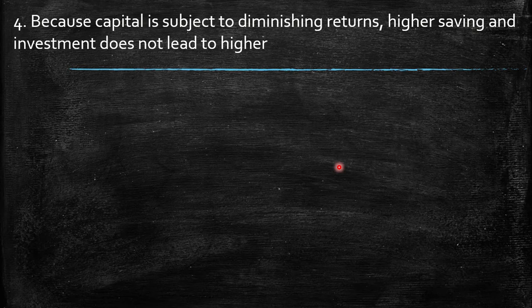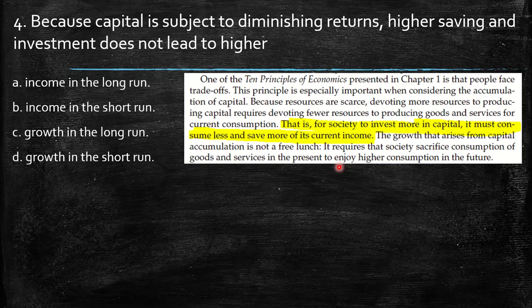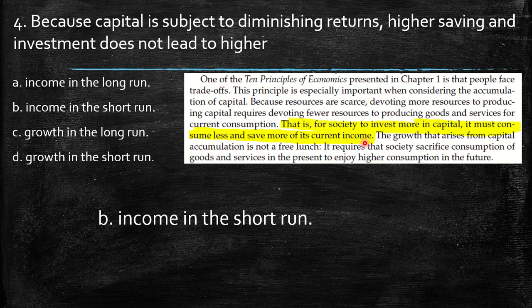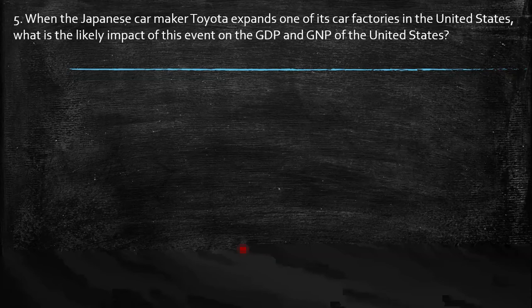Fourth question: because capital is subject to diminishing returns, higher saving and investment does not lead to higher what in the long run — income in the short run, growth in the long run, income in the long run, or growth in the short run? During the chapter, there is a paragraph saying that for society to invest more in capital, it must consume less and save more of its current income. So this does not lead to higher income in the short run, because that part of income must be saved instead.